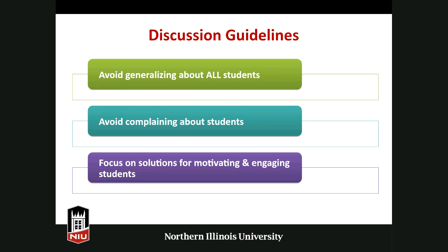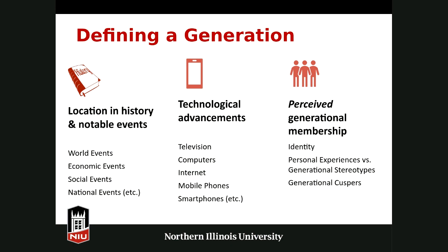We also want to talk about what it means to define a generation. When we talk about generations, what defines a generation is their location in history, including noteworthy historical events — world, economic, social, national, and local. Something else that defines a generation are the technological advancements during their lifetimes, such as the inception and evolution of the internet or the progression from landline phones to mobile phones to smartphones. Most importantly, a defining feature is whether someone perceives generational membership — does a person identify with that generation? What about generational cuspers, those born on the cusp of two generations who may share commonalities and differences with both and might not feel part of either?